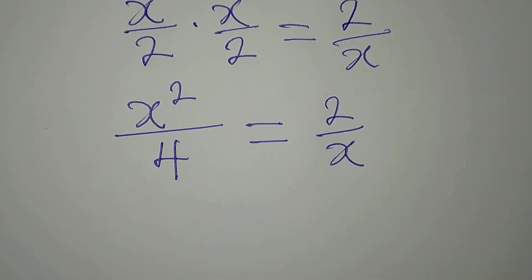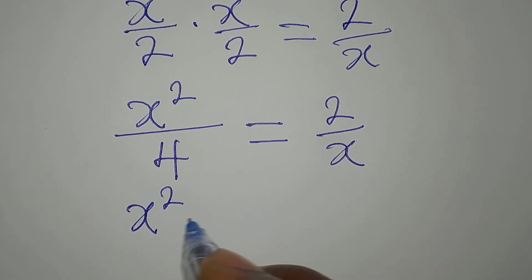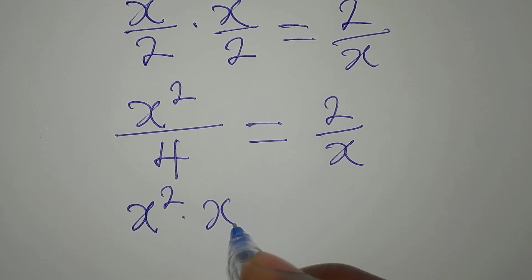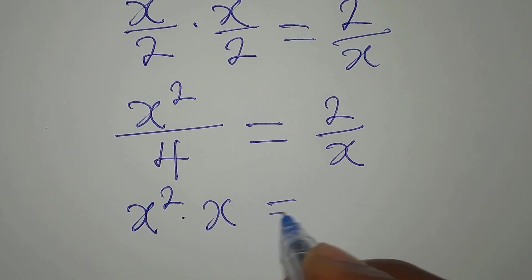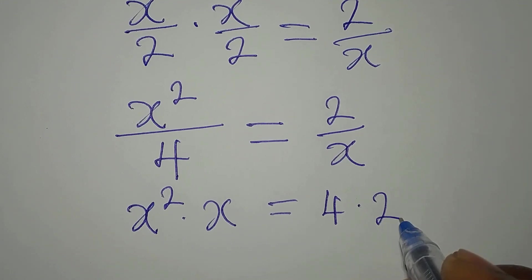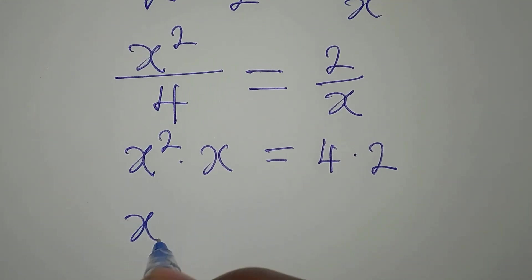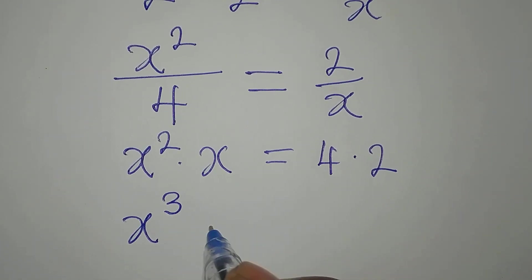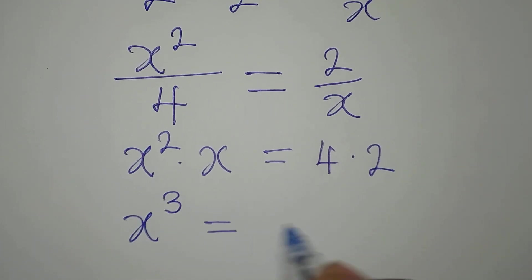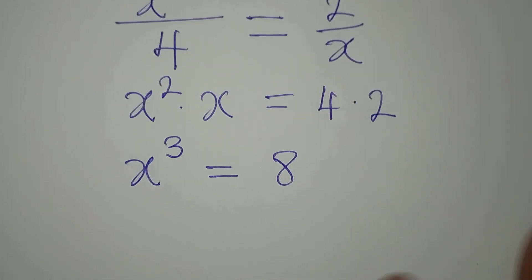At this point we can cross multiply, so we'll have x squared multiplied by x equal to 4 multiplied by 2. Now x to the power of 3 is equal to 8, because 4 times 2 is 8.